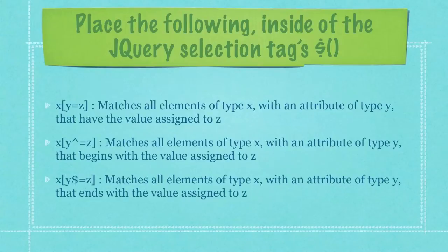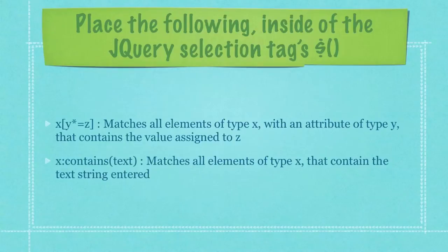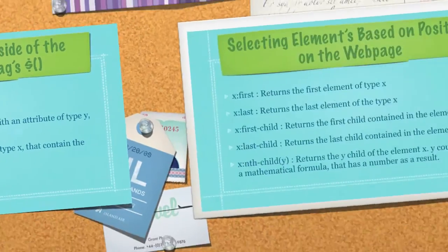This is probably better understood in code examples, but this is the best way to show you every possible way to select elements. If it's a little confusing, move on to the next tutorial where I'll explain a lot of this through actual code. The first bulleted item here will match all elements of type X with an attribute of type Y that contains the value assigned to Z. And finally, this last piece of code will match all elements of type X that contain the text string entered.